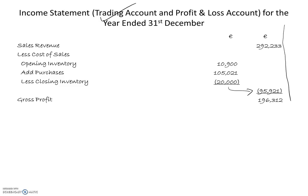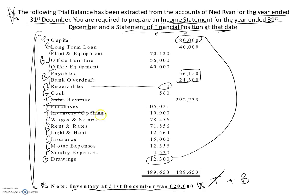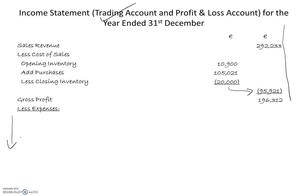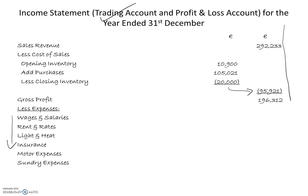We now move on to the profit and loss account. The profit and loss account is a little bit easier — it is simply a listing of expenses. So we have gross profit less expenses. Going back to the trial balance and looking for the expenses, the items with the letter P attached to them going into the profit and loss account, I am simply going to take those in the order given and list them: wages and salaries, rent and rates, light and heat, insurance, motor expenses, and sundry expenses. I will put the numbers in this column, add them up, bring the total out, line it up underneath the gross profit, and get the net profit figure.